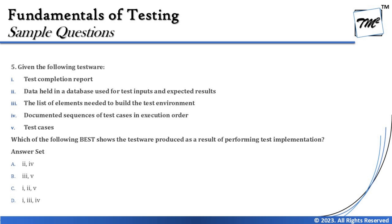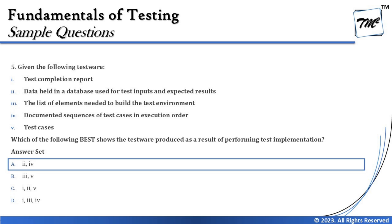Number four says documented sequence of test cases in execution order — the test execution schedule is prepared as part of the test implementation phase. And test cases are certainly part of test design. So the right answer for this question is A, that is options two and four: data held in a database used for test inputs and expected results, and documented sequence of test cases in execution order — these are the test work products produced as a result of performing the test implementation phase.